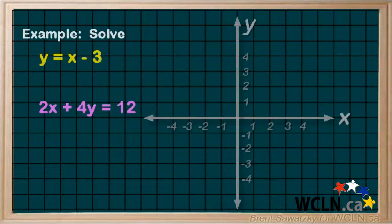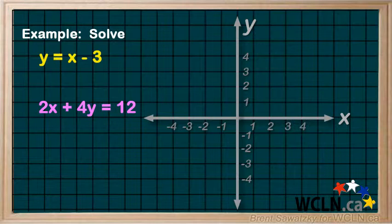Sometimes, we're given a system of equations just like this. y equals x minus 3 and 2x plus 4y equals 12. Now, as a system of equations, we recognize that they both have the same variables. In this case, x and y. And therefore, can be plotted together on the same grid. So, let's do that.